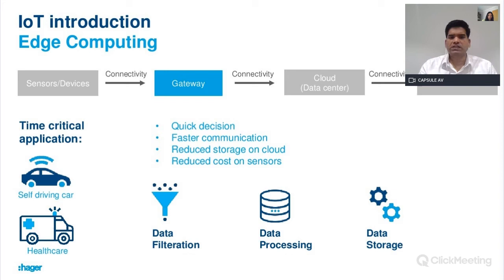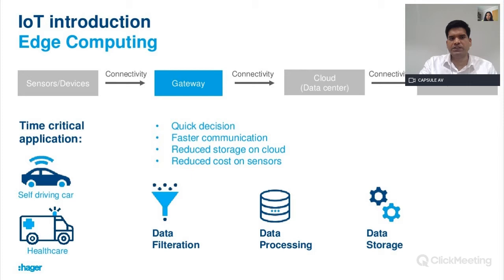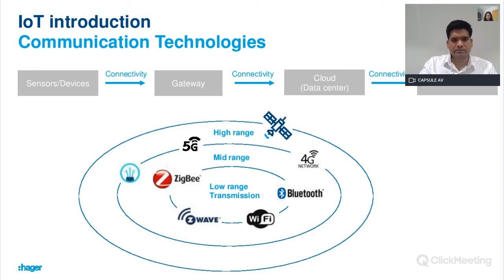The benefits of the gateway include increasing the battery life of battery-operated sensors, enabling faster communication, and reducing the storage and processing requirements on the cloud. Processing data on the cloud as well as at the gateway or sensor level is called edge computing. This gives the benefit of faster and more reliable communication between sensors and gateway, especially for critical applications.